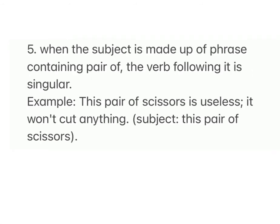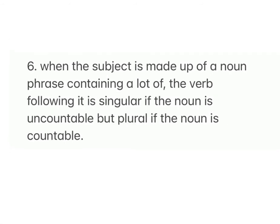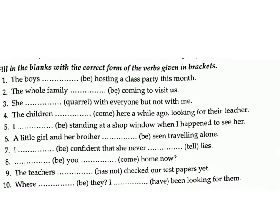Rule 5: When the subject is made up of a phrase containing 'pair of', the verb following it is singular. Example: This pair of scissors is useless — it won't cut anything. (Subject: this pair of scissors.) Rule 6: When the subject contains 'a lot of', the verb is singular if the noun is uncountable, but plural if the noun is countable.